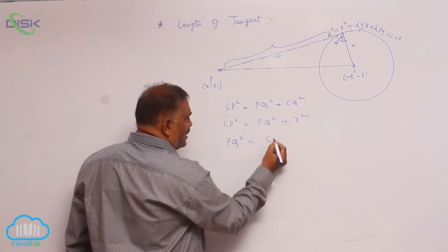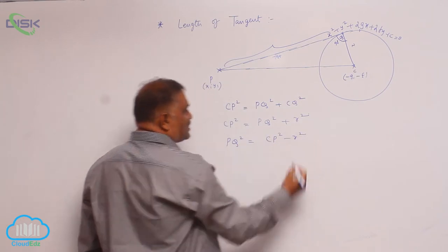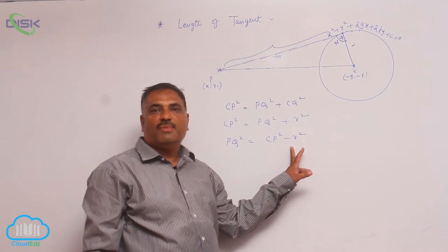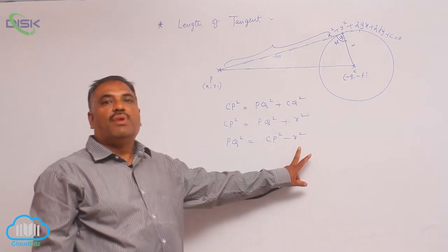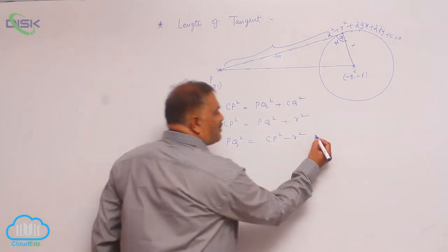We require PQ square, CP square minus r square. As we discussed, CP square minus r square is nothing but power of the point, that is given by S1-1.